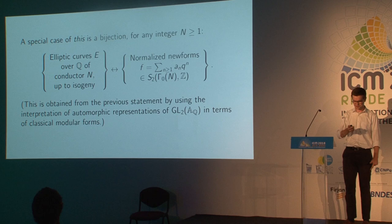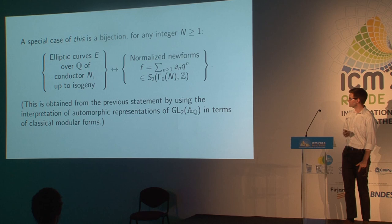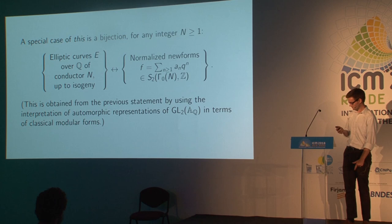Here's a refinement which is actually a theorem: this is what happens when K = ℚ, and it's basically the Shimura–Taniyama–Weil conjecture, proved in the case of square-free conductor by Wiles, and for general conductor by Breuil, Conrad, Diamond, and Taylor.